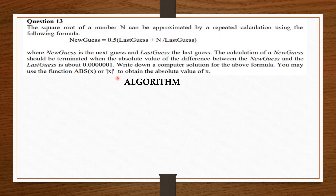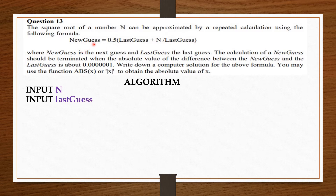We have to take the number the user wants to find the square root of, so we input n. Then we have to take the last guess from the user so that we can compute the new guess. Now that we have n and the last guess, we are going to store a copy of the user's last guess in new guess. So we say new guess equals last guess. As you go along, you'll understand why this is.